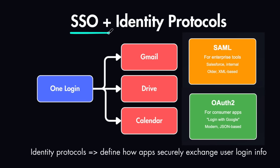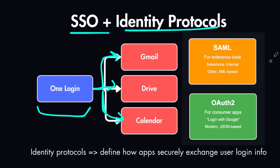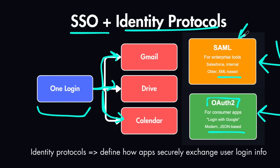Lastly, we have SSO — Single Sign-On — and the identity protocols used with it. Single sign-on lets users log in once and access multiple services. For example, when you log into Google, you can access Gmail, Drive, and Calendar and all their other services. Behind the scenes, SSO uses either the SAML protocol or the OAuth2 protocol. OAuth2 is used more often nowadays for modern applications to log in with Google, GitHub, or other service providers — it is modern and JSON-based. SAML, on the other hand, uses an XML-based approach and is still very popular in legacy systems and companies using things like Salesforce or internal dashboards. These identity protocols define how apps securely exchange user login information between each other.